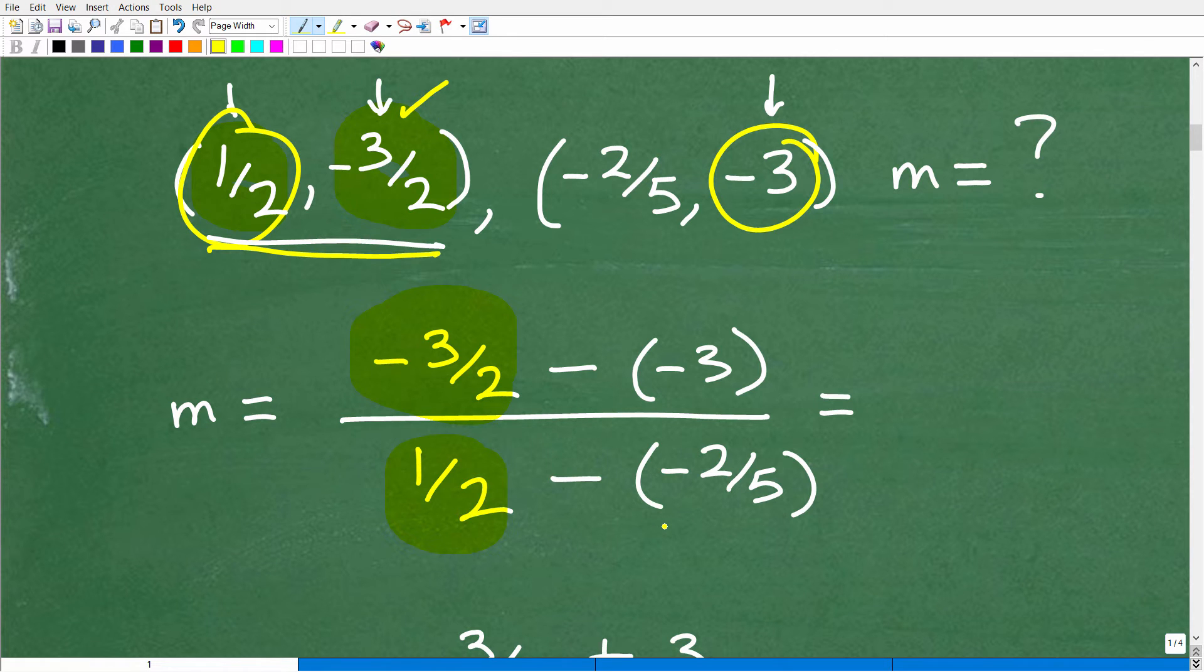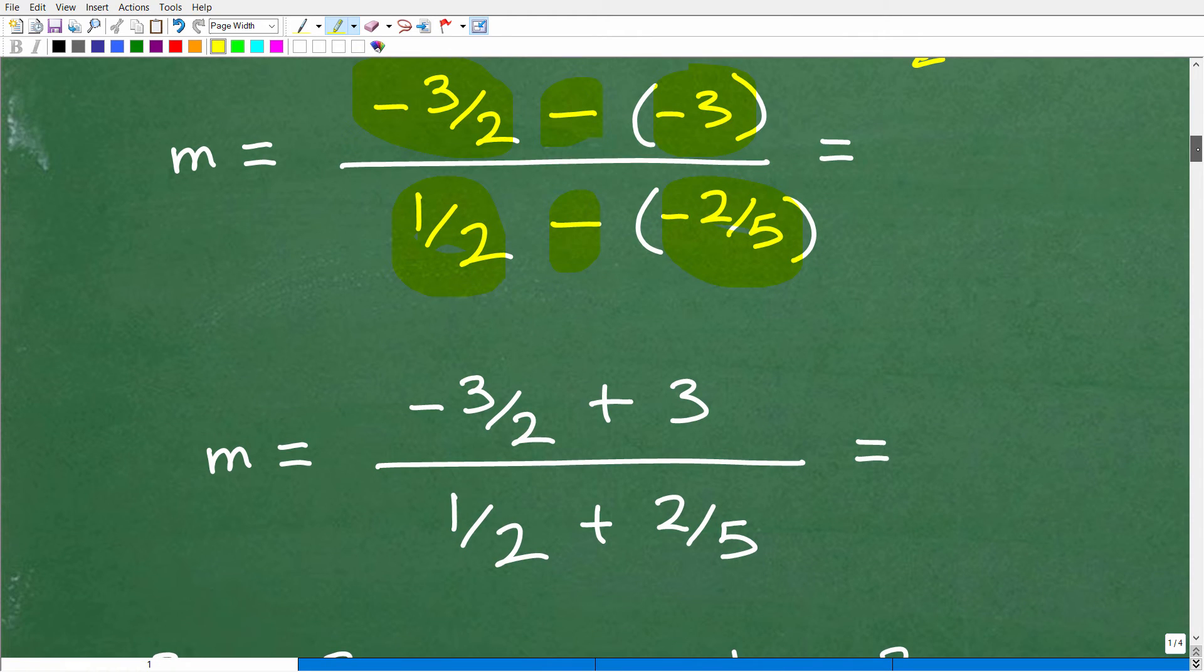So if you're like, okay, I get all of that. So let's see if you can handle the fraction problems now, the fraction work that's needed to simplify the rest of this problem. So we have to figure out negative 3 halves minus a minus 3 over 1 half minus a negative 2 fifths. Now, if you can't do this, you're going to have to go back and work on your fraction skills. But let me go ahead and show you the rest of this problem. So here we go.